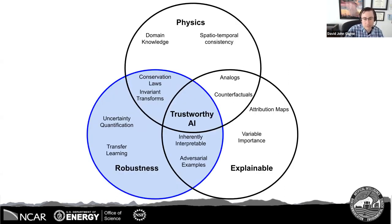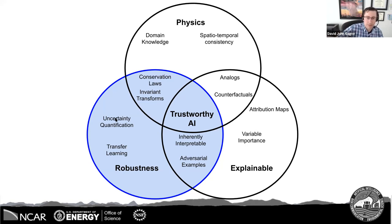Next, we're going to jump into robustness and talk about ways to ensure your model has more robustness. There's obviously a lot of overlap with physics-based AI and explainable AI when ensuring robustness, but we wanted to highlight a few things that are more directly in the robustness category.